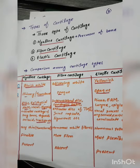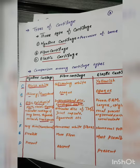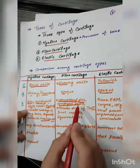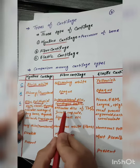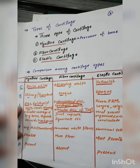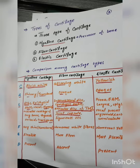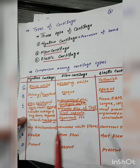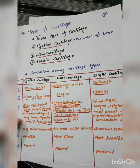Fibrocartilage is found at the pubic symphysis, where the two pubic bones articulate. The temporomandibular joint contains fibrocartilage as well. Fibrocartilage is also found in articular discs and joint capsules. The ligaments contain fibrocartilage, and it is also present in other areas of the body.